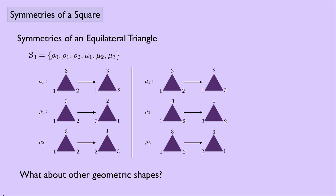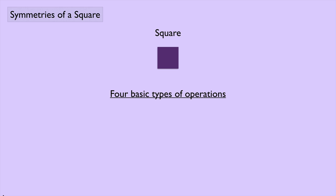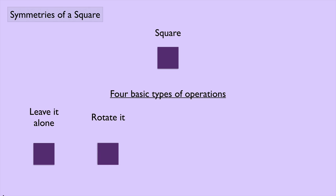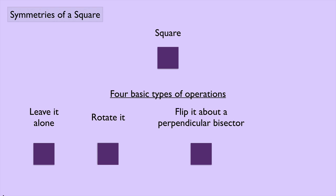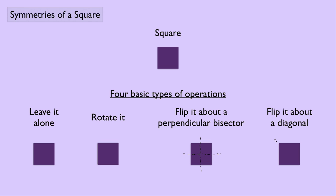What about other geometric shapes? Let's consider a square. We're going to look at four basic types of operations — things we can do to the square that will bring it back to where it was. We could leave it alone, rotate it, flip it about a perpendicular bisector (either the vertical or horizontal one), or flip it about one of the two diagonals.